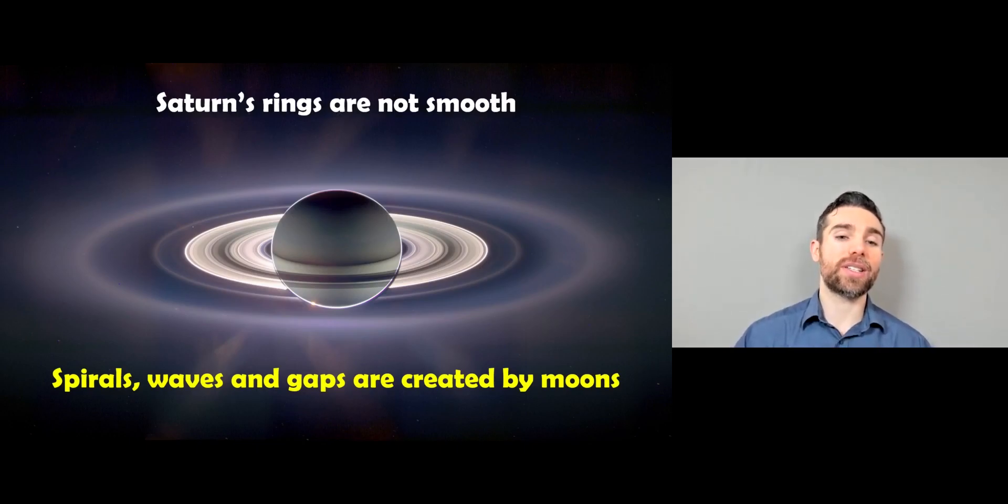Now, if we have a look at the rings, they're not smooth. There are things like spirals, there are waves, there are gaps in there. And these are predominantly caused by moons either inside the rings or moons orbiting around the outside.